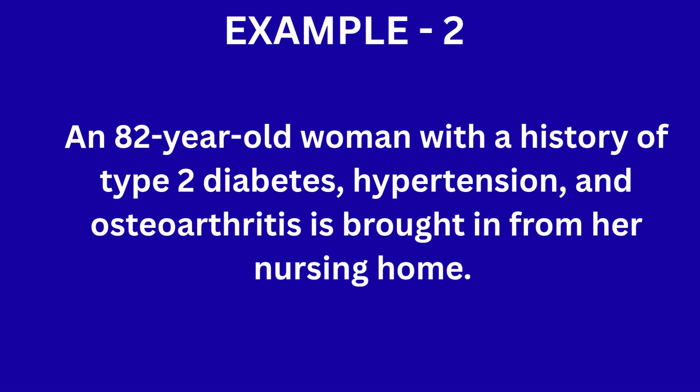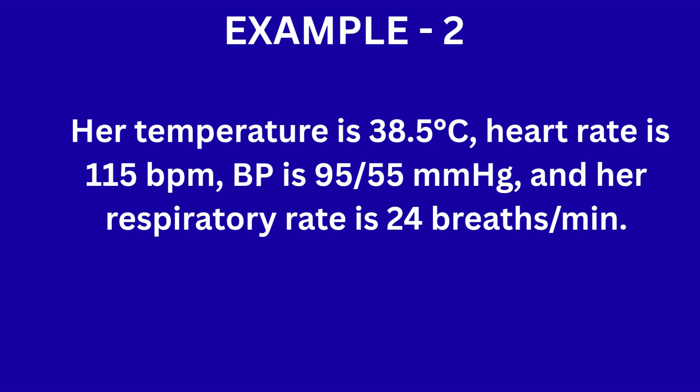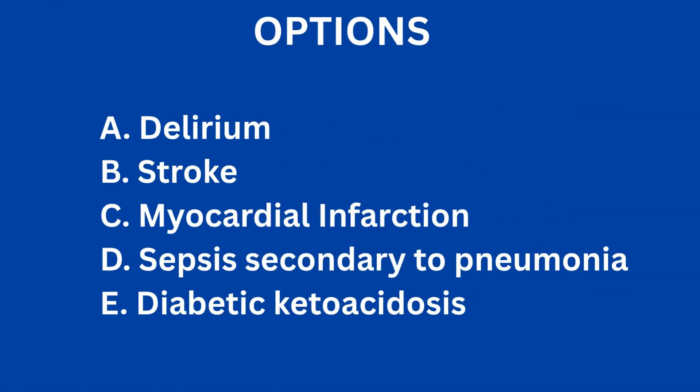Example 2: An 82-year-old woman with a history of type 2 diabetes, hypertension, and osteoarthritis is brought in from her nursing home. She has had a productive cough for 3 days and feels generally unwell. Her daughter mentions she has also been more forgetful than usual. Her temperature is 38.5°C, heart rate is 115 bpm, blood pressure is 95/55 mmHg, and respiratory rate is 24 breaths per minute. The question is: what is the single most likely diagnosis? Options: A) delirium, B) stroke, C) myocardial infarction, D) sepsis secondary to pneumonia, E) diabetic ketoacidosis.